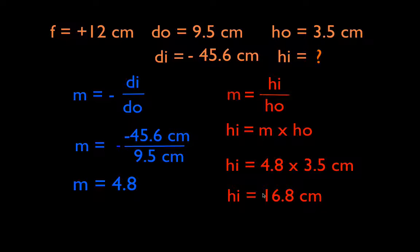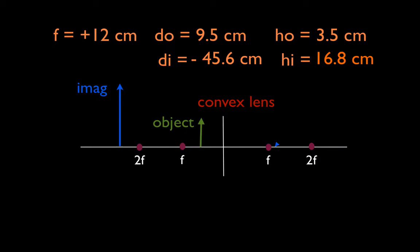This is a positive image height, which means it has the same orientation as the object. If it was negative, then it would have the other orientation. Remember the object was upright. In this case the image therefore is going to be upright because this is a positive number, a positive image height. So we can plug that in here. We can see we got everything finished. And let's just go back and compare what we thought we were going to get to what we actually got.